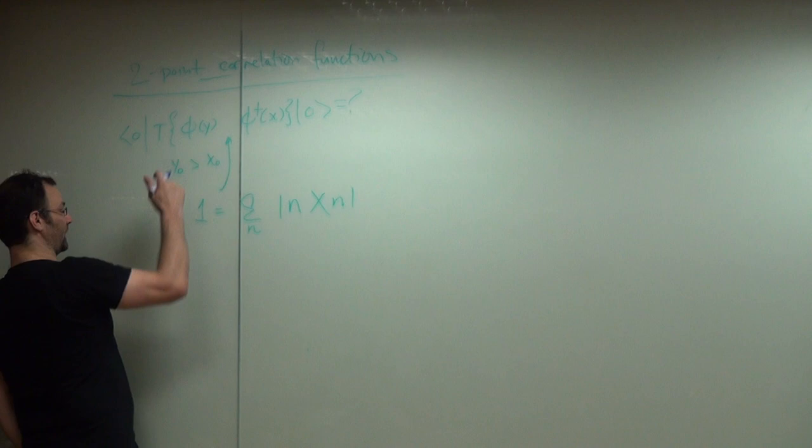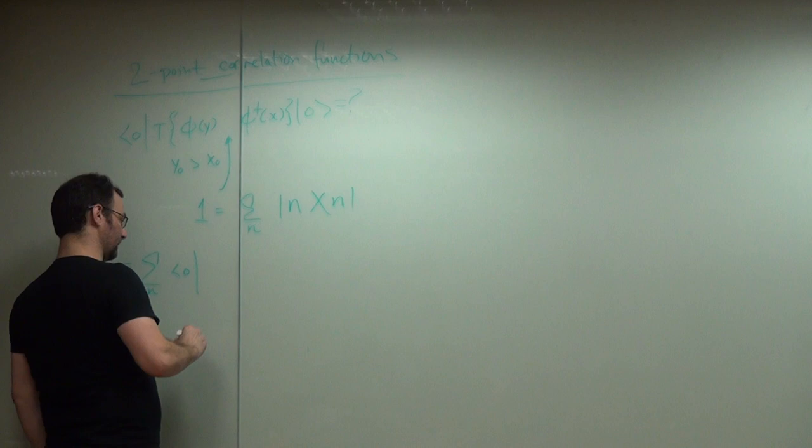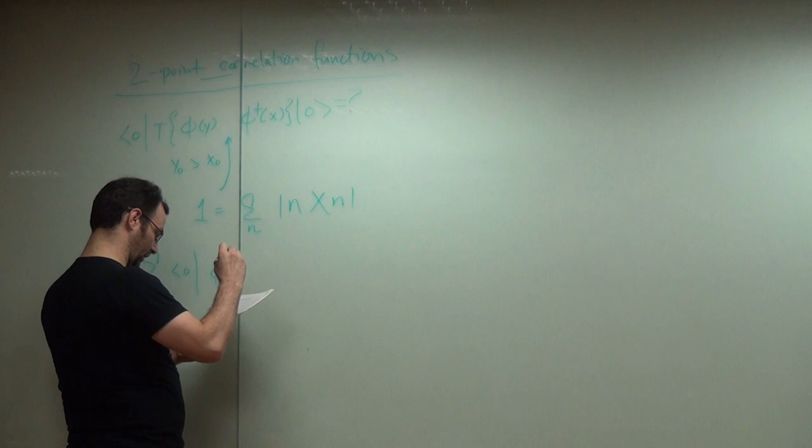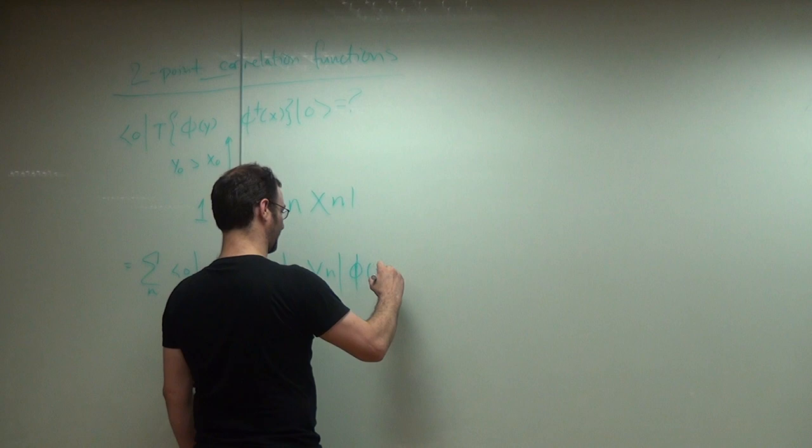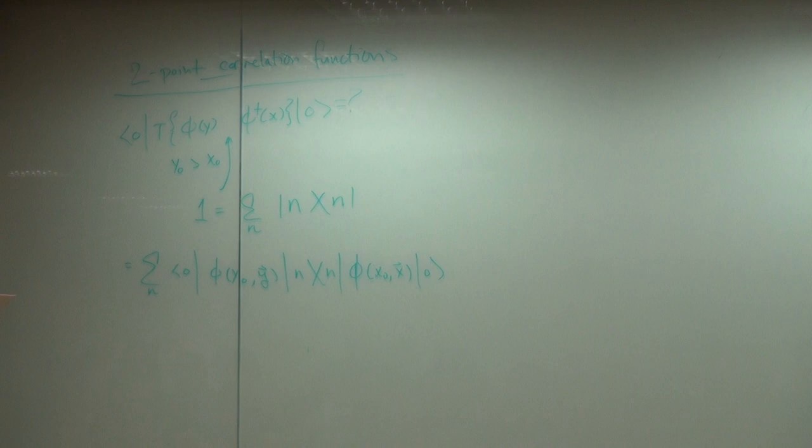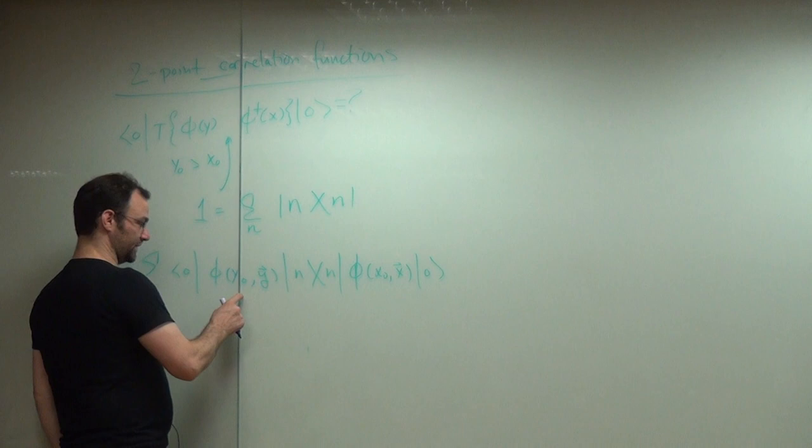What do you get? Sum over n vacuum, we have sum operator, I'll call it y0, y spatial, n, x0, x spatial, vacuum. Now, what I want to do is use time translation invariance to shift both of these operators to t equals 0.